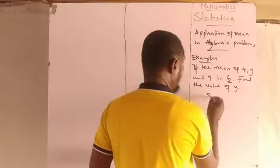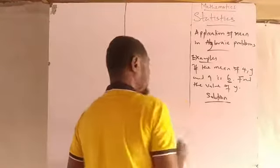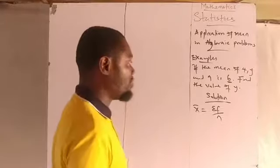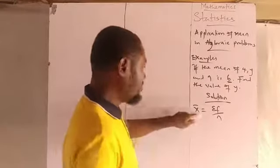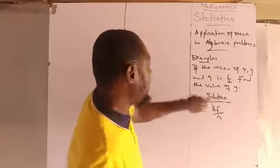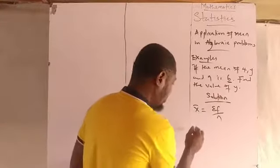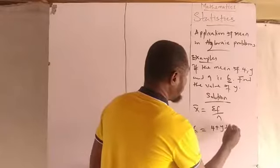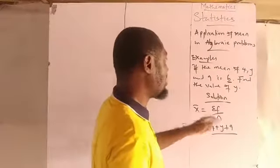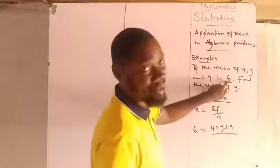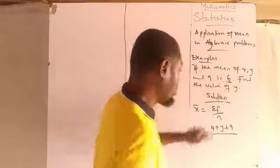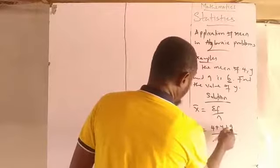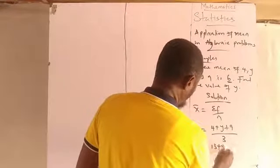So we replace — using substitution — the mean with the value given, which is 6. That gives us: 6 is equal to the sum of 4, y, and 9, all over 3, because there are three numbers. Adding the constants: 4 plus 9 is 13, so we have 6 equals 13 plus y over 3.